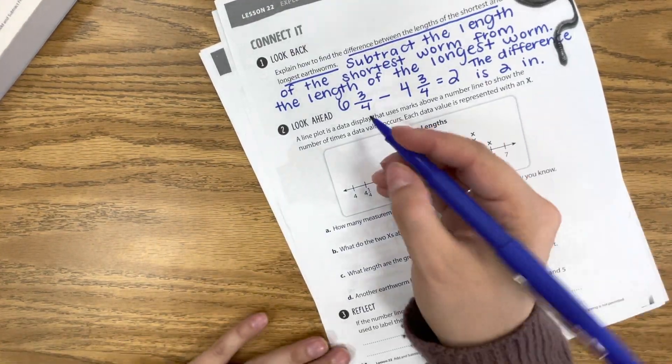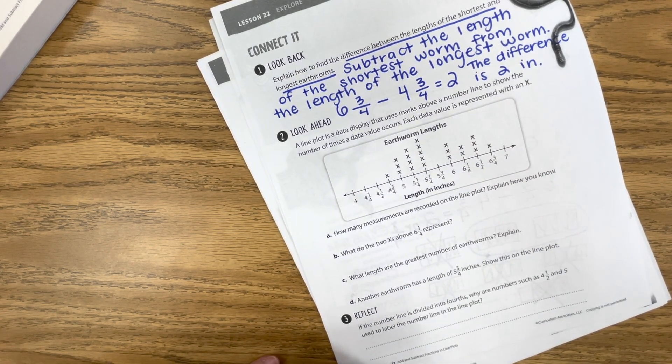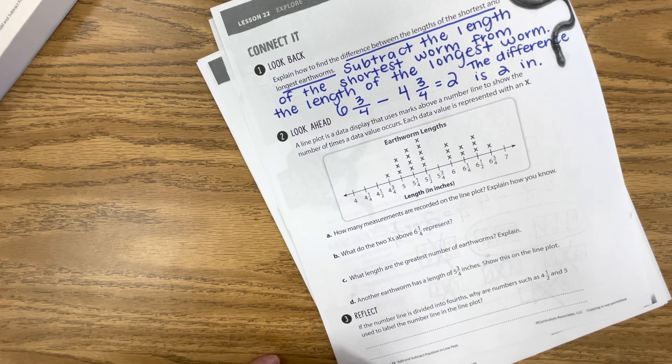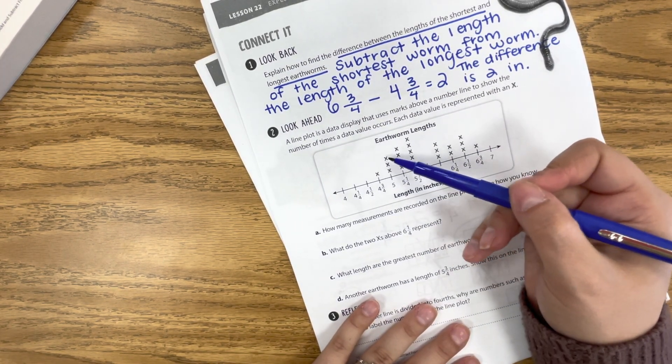Now looking ahead, a line plot is a data display that uses marks above the number line to show the number of times a data value occurs. Each data value is represented by 1, by an X. So each of these is one worm in this case.